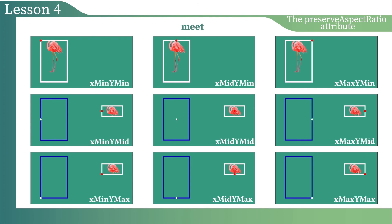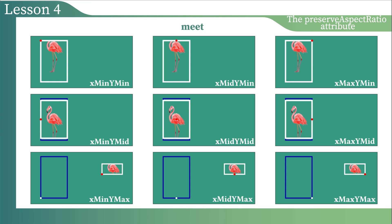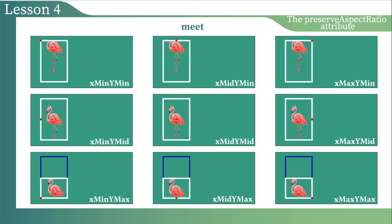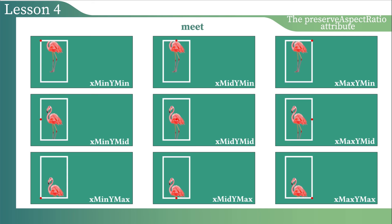The second is the center align group, which includes xMinYMid, xMidYMid, and xMaxYMid. When the viewBox fits into the viewport, the left and right sides of the viewBox meet with the left and right sides of the viewport, and the viewBox expands in both the top and bottom directions. The third is the bottom align group, which includes xMinYMax, xMidYMax, and xMaxYMax. The viewBox will expand to the top in all three cases, because when the viewBox fits into the viewport, three sides meet and the only possible direction for expanding is upward.